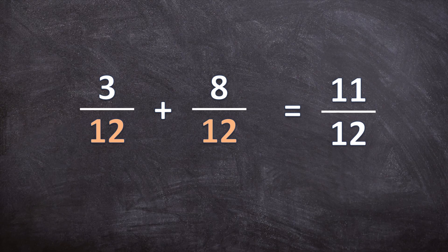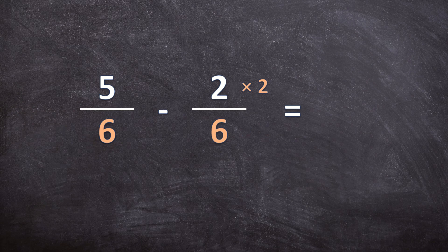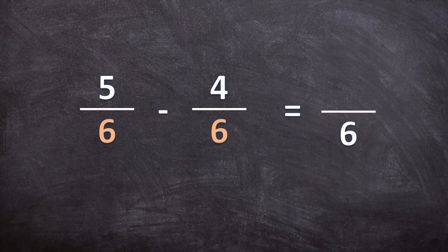Now let's look at one subtraction example. When you subtract with unlike denominators you follow exactly the same steps, but at the end you subtract instead. We need to make the denominators the same — multiply 3 by 2 to get 6. When we multiply the denominator by 2, we also multiply the numerator by 2: 2 times 2 is 4. Now that the denominators are the same we subtract: the denominator in the answer is 6, and 5 minus 4 is 1. So our final answer is 1 over 6, which we cannot simplify further.